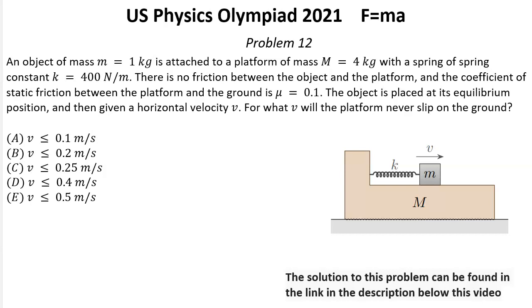The coefficient of static friction between the platform and the ground is μ = 0.1. The object is placed at its equilibrium position and then given a horizontal velocity v. For what v will the platform never slip on the ground?